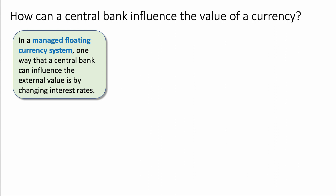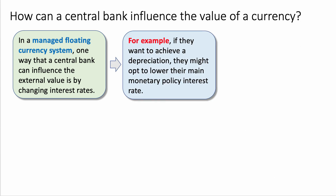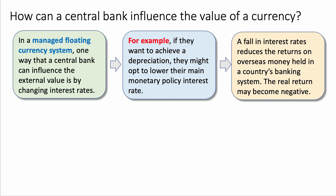I start off by referring directly to a managed floating exchange rate. In a managed floating system, one way that the central bank can influence the external value is by changing interest rates. For example, the Bank of Japan or the People's Bank of China, if they want to achieve a depreciation, might opt to cut their main monetary policy interest rate — the rate of interest over which they have control. Falling interest rates reduces the returns on overseas money held in the country's banking system.